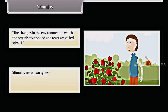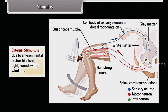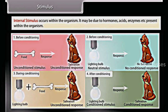Stimuli are of two types: external stimulus and internal stimulus. External stimulus is due to environmental factors like heat, light, sound, water, wind, etc. Internal stimulus occurs within the organism — it may be due to hormones, acids, enzymes, etc. present within the organism.